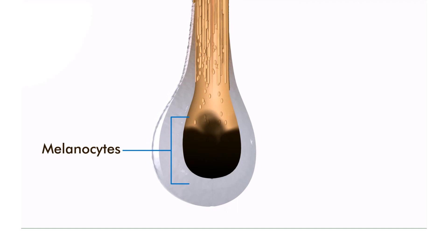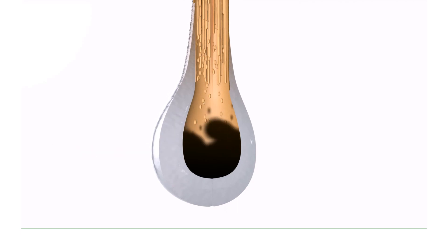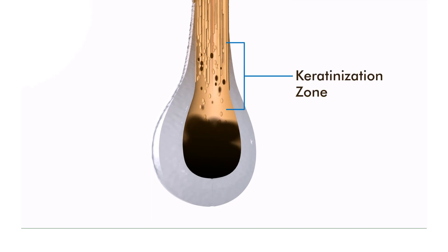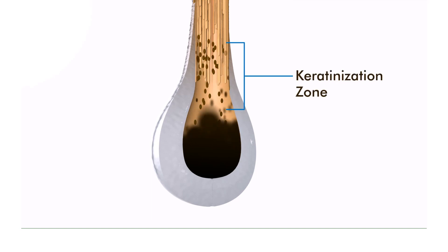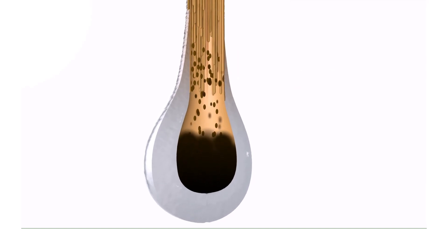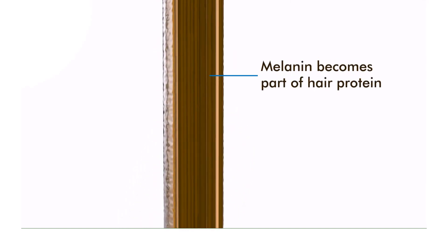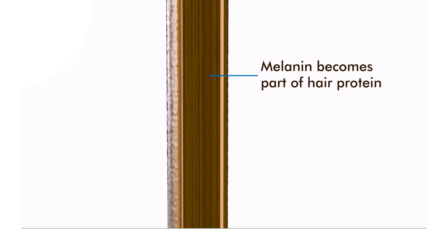As the melanocytes begin to produce their combinations of melanin, they work up through the differentiation zone into the keratinization zone. Here is where they are hardening with protein. Melanin becomes a part of the hair's protein.